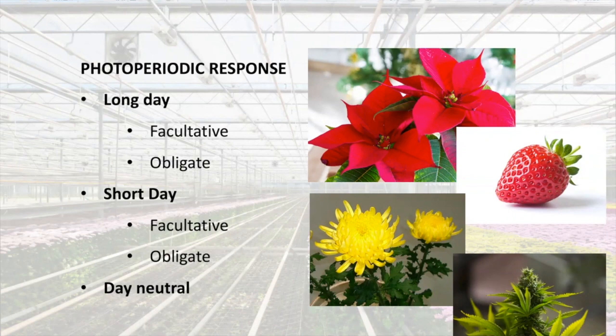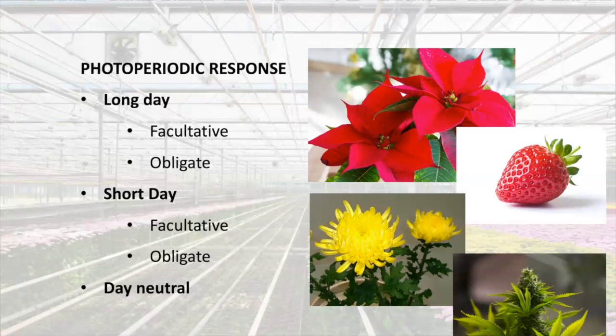Long day and short day responses can be either facultative or obligate. Long day plants are plants where flowering is promoted by longer days, usually higher than 14 hours for the photoperiod, but this is crop-specific and even cultivar-specific. Obligate long day plants will only flower under long days, and facultative long day plants can flower under short days and long days, but will flower earlier under long day conditions.